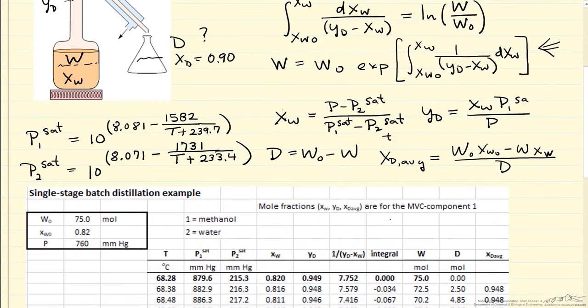If we look at this column here, I set Solver to vary the temperature to determine an x_w value of 0.82. That then was the starting temperature in the system.